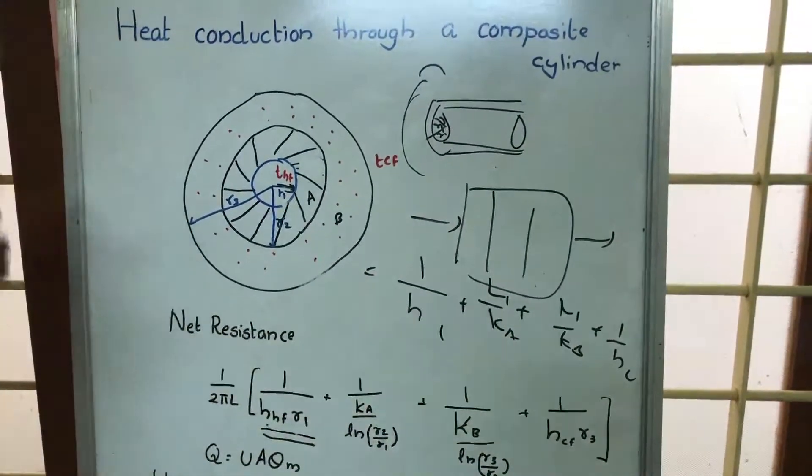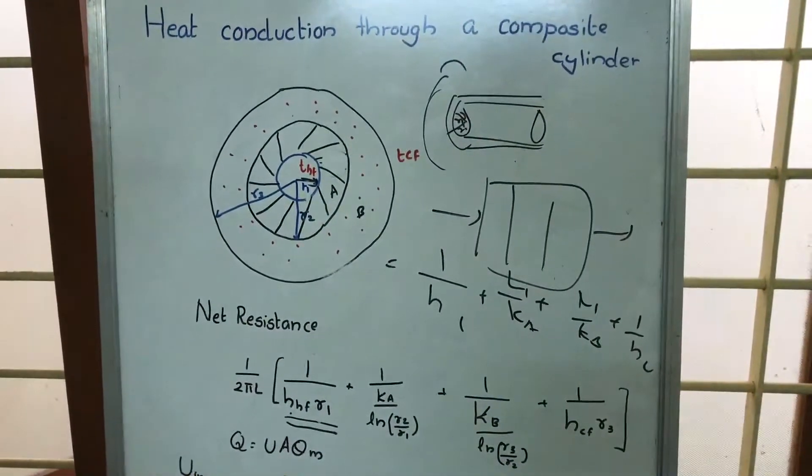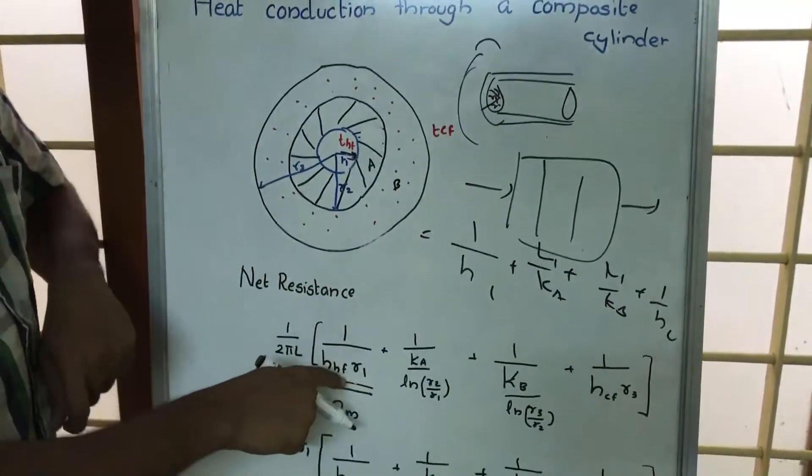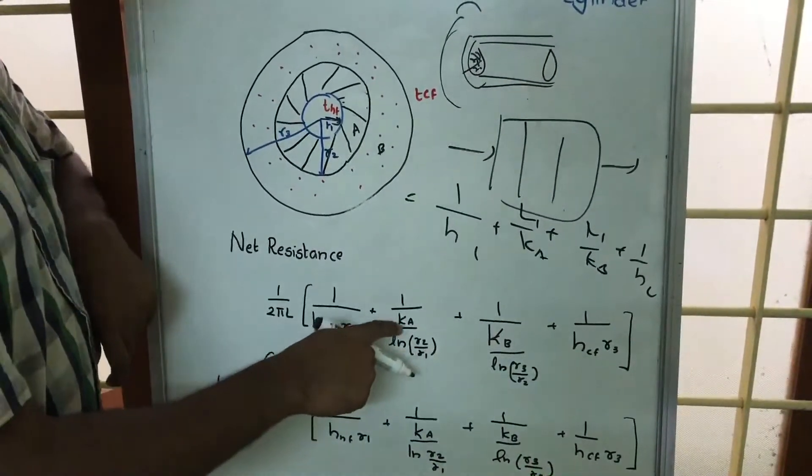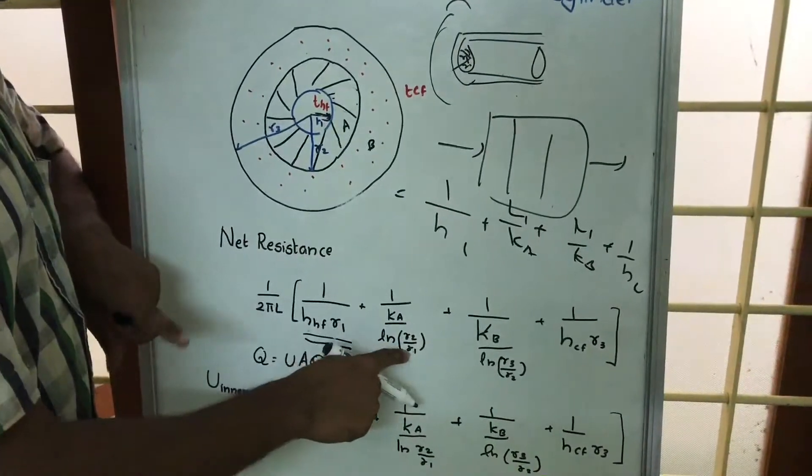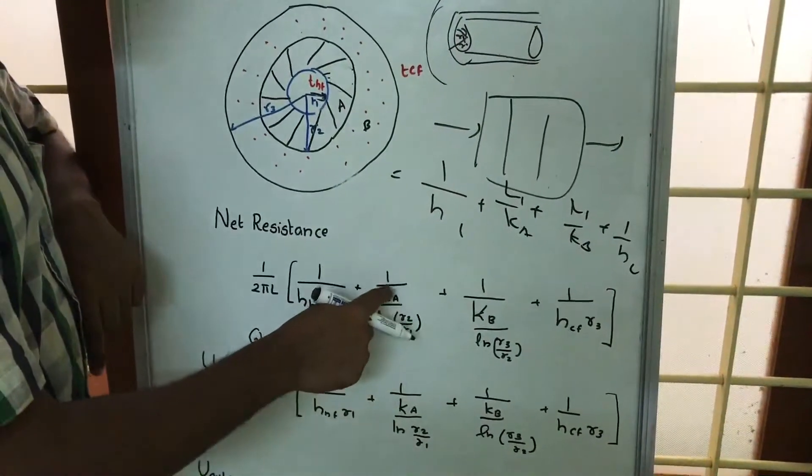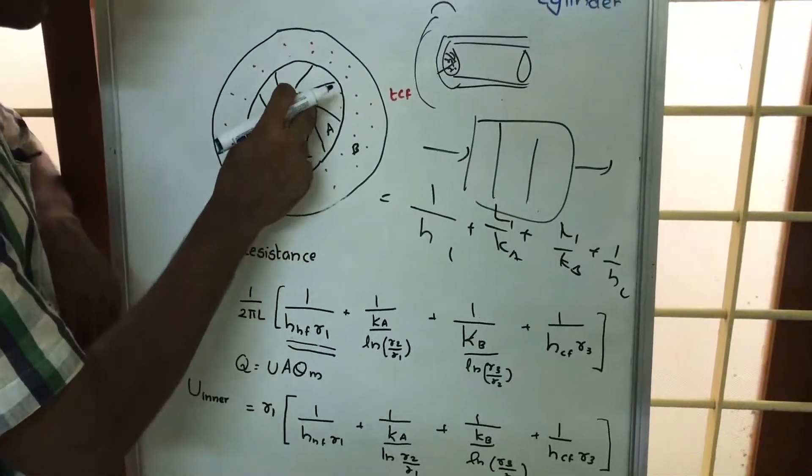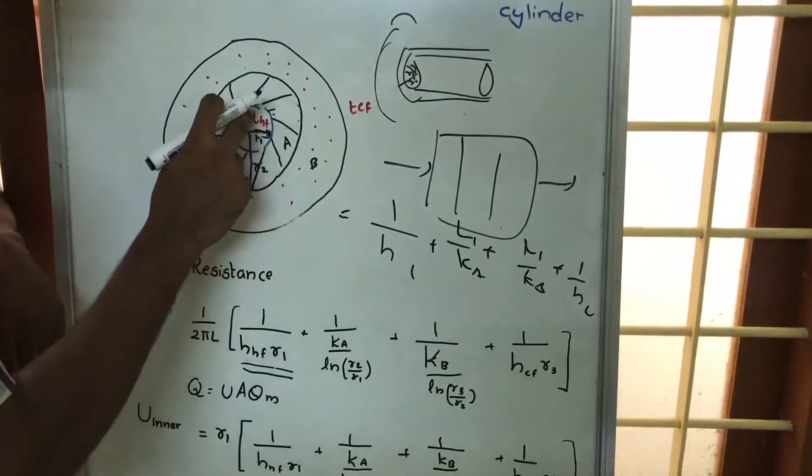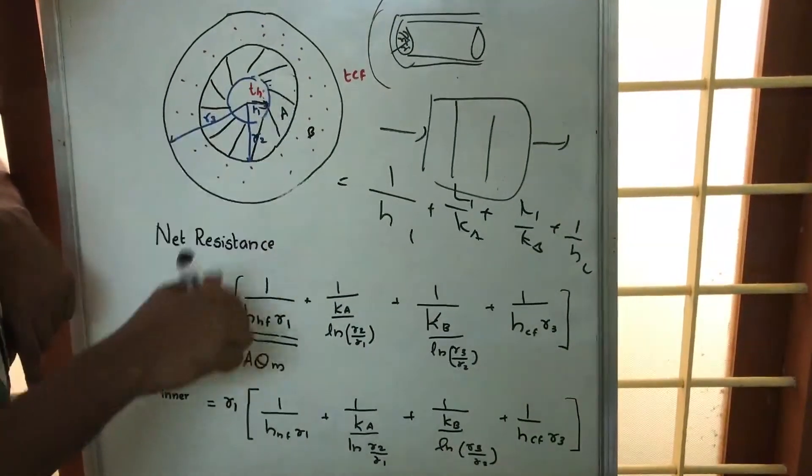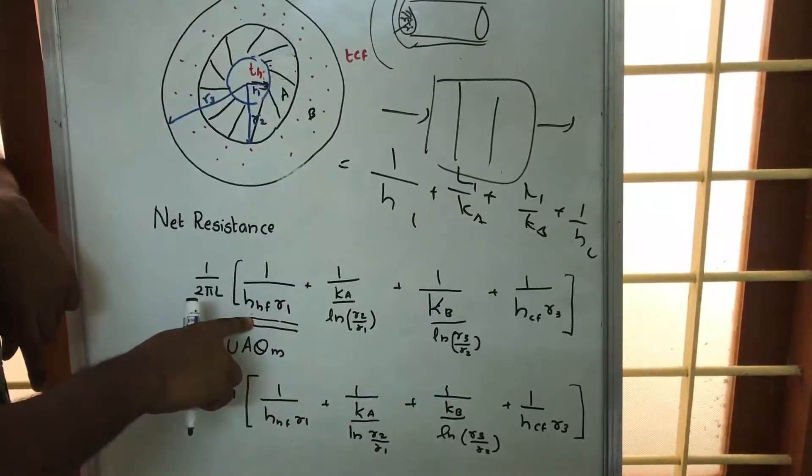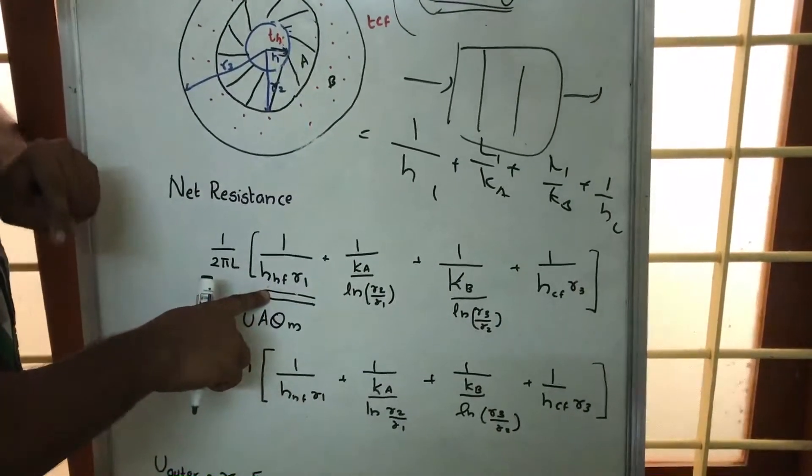Similarly, when we come to this hollow cylinder, it is like 1 by H R1 plus 1 by K log R2 by R1. First we are considering the inner surface. At the inner surface there is only convection, so we write 1 by HHF R1, where R1 is radius of the inner surface.